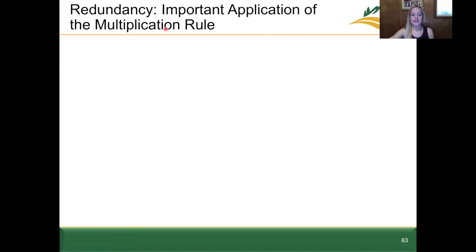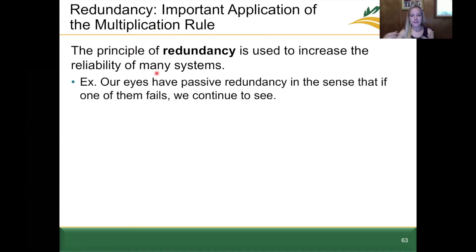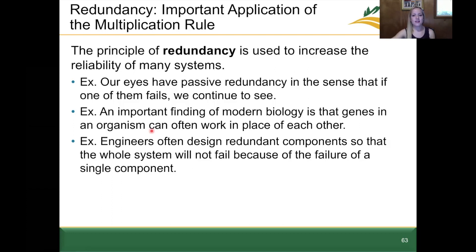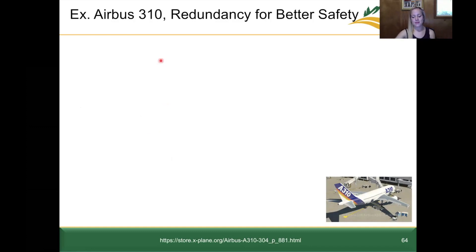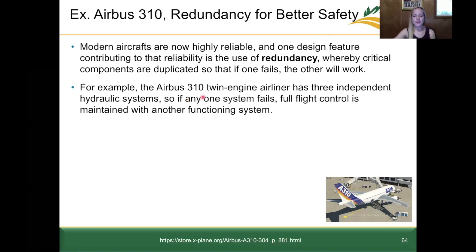The next topic is redundancy — an important application of the multiplication rule. The principle of redundancy is used to increase the reliability of many systems. For example, our eyes have passive redundancy because if one fails, we can still see with the other. In engineering, engineers design redundant components so the whole system won't fail due to one component's failure. Modern aircraft are highly reliable because critical components are duplicated. For example, the Airbus 310 has three independent hydraulic systems — if one fails, full flight control can still be maintained with another functioning system.